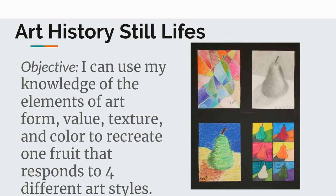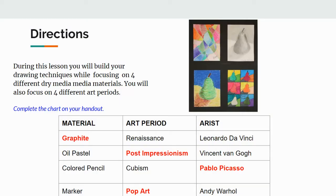The objective is: I can use my knowledge of the elements of art — form, value, texture, and color — to recreate one fruit that responds to four different art styles. But remember, we're modifying this, so you're going to pick two instead of four. During this lesson, you will build your drawing techniques while focusing on four different dry media materials and four different art periods. Once again, you're just picking two.